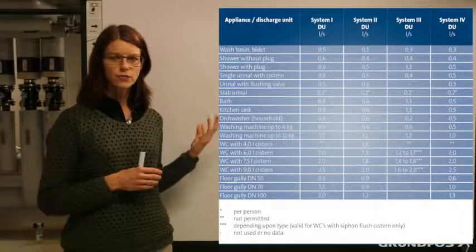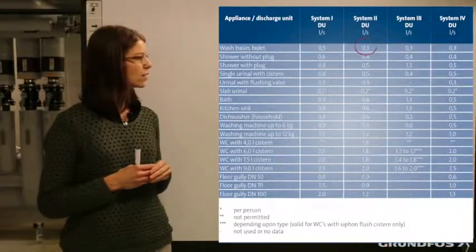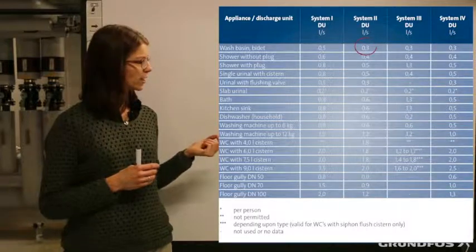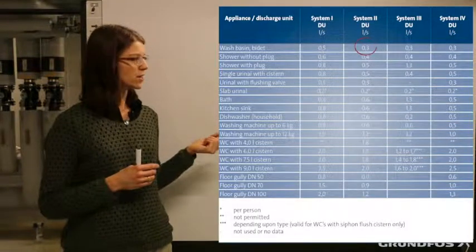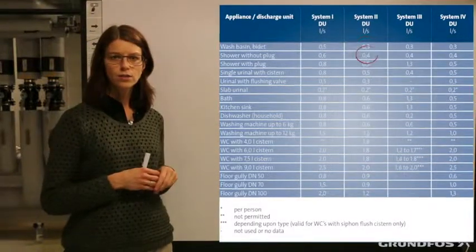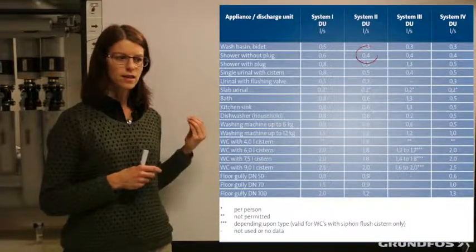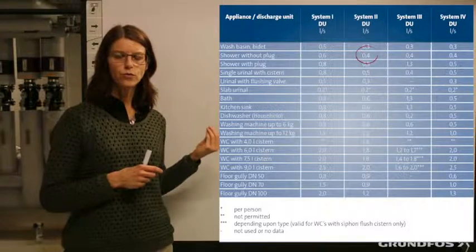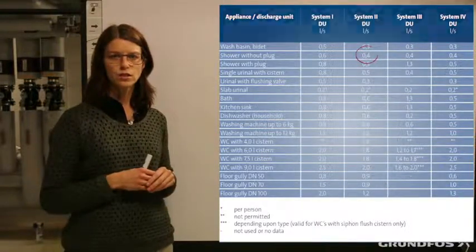You can see for example that the wash basin has a flow rate of 0.3 liters per second, and the shower has a flow rate of 0.4 liters per second. That's an estimate of what the flow is from these discharge units.